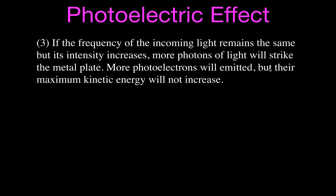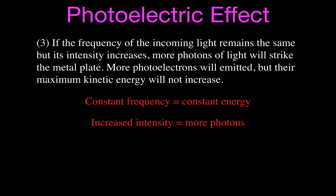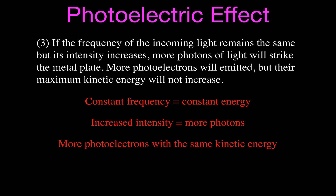Their kinetic energy will not increase, because we haven't increased the frequency — we've only increased the intensity. With constant frequency we have constant energy per photon. Increasing the intensity gives us more photons striking that metal plate, and more photons can emit more photoelectrons, but those photoelectrons will all have the same kinetic energy — there will just be more of them. You can think of each photon knocking off one electron if it has enough energy.